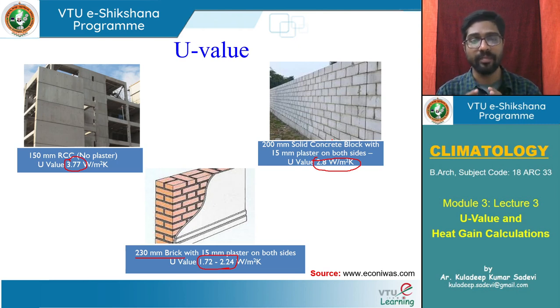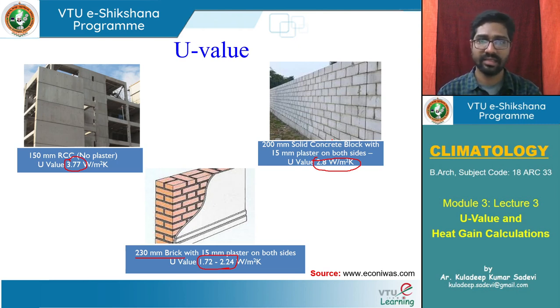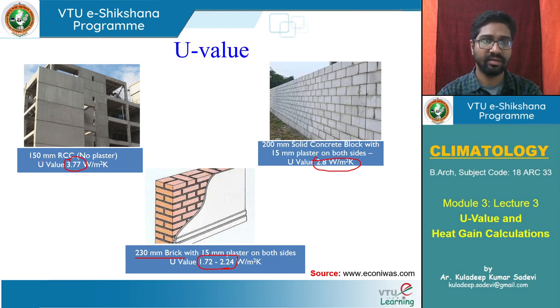This is the U-value context. If we increase a 150 mm RCC wall to 250 mm RCC, we get a slightly lesser U-value — maybe 2.8 W/m²·K instead of 3.77. But the problem is we cannot just decide to go for very thick concrete walls, because structural design may be affected — self-weight, cost, and unnecessary material usage just to cut down heat gain.